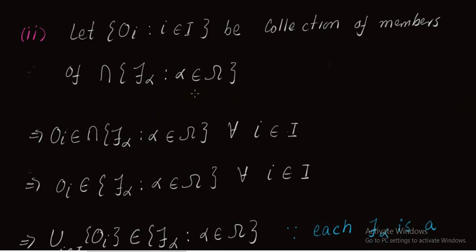Now we move to the second condition, in which we prove that the union of any number of members of the intersection τ_α (α ∈ Ω) again belongs to this intersection. For this, let {Oᵢ : i ∈ I} be a collection of members of the intersection τ_α (α ∈ Ω). We prove that the union of these elements belongs to the intersection of the topologies. From here we can write Oᵢ belongs to the intersection τ_α (α ∈ Ω) for all i in the indexing set.